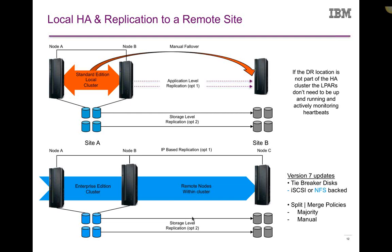With the enhancements to the new split and merge policies — if you set those policies to manual, you effectively get user confirmation on failover. You can set it up to send you prompts via email; you'd get notification that something happened and the cluster's waiting for you to take action. Then you can go into the SMIT panels and say go ahead and proceed, or do it from the command line. We also introduced the concept of tiebreaker disks — an iSCSI or NAS-based solution. With HA 7.2, you can also have an NFS-backed space act as a tiebreaker.